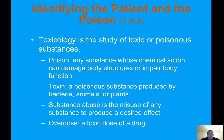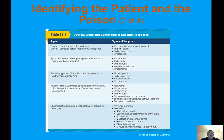Substance abuse is the misuse of any substance to produce a desired effect. An overdose is a toxic dose of a drug. The different classes of agents include opioids, sympathomimetics, sedative-hypnotics, and anticholinergics. Each drug class has characteristic signs and symptoms that you would expect to see.